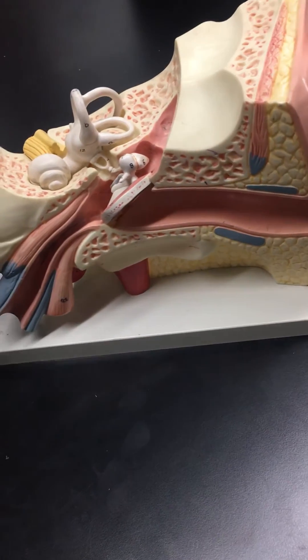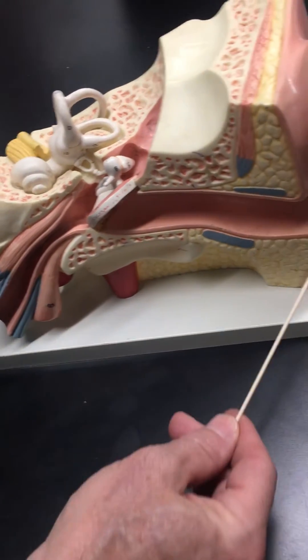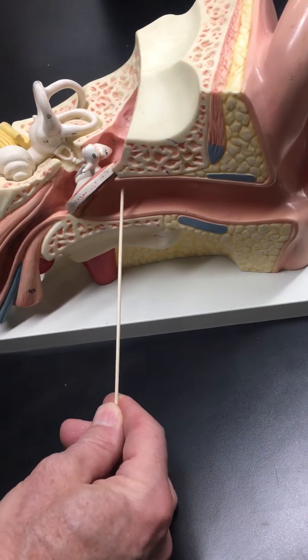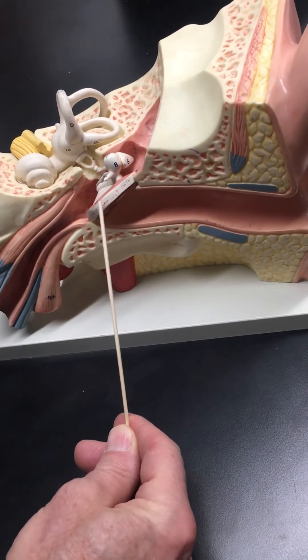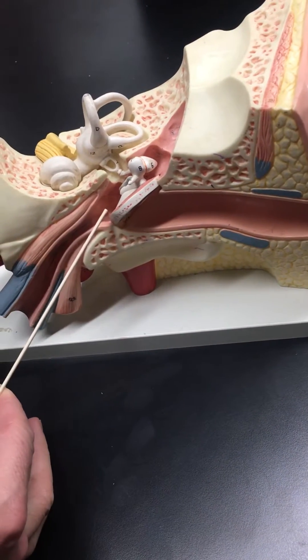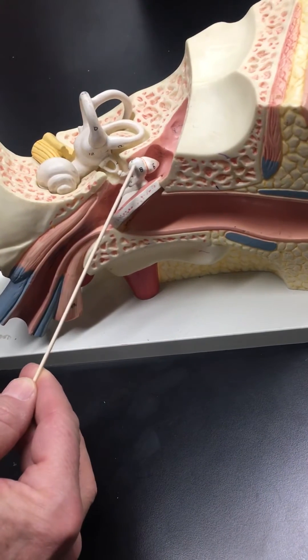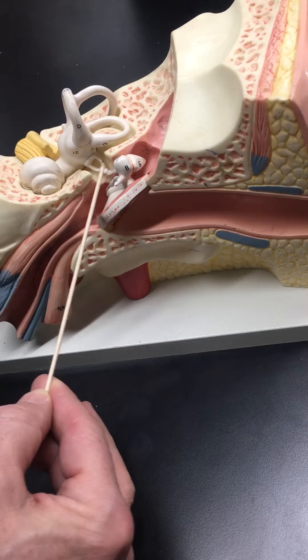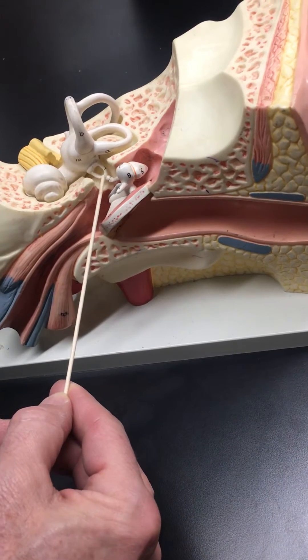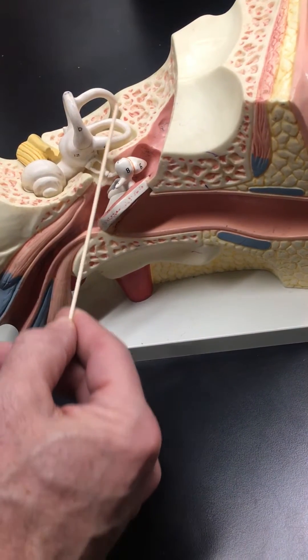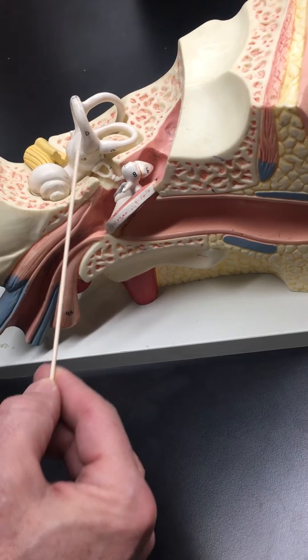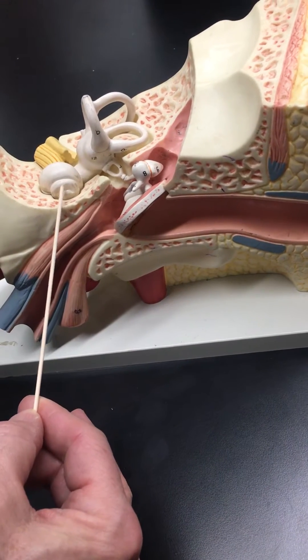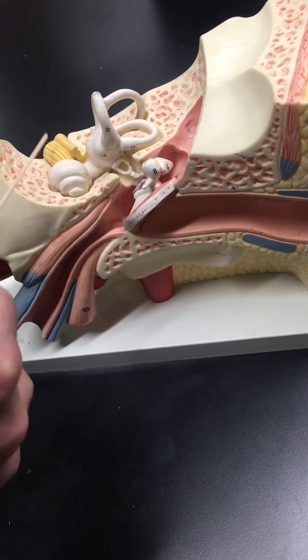Okay, close-up version of the ear. External acoustic meatus, tympanic membrane, malleus, incus, stapes, semicircular canals - three of them, cochlear, vestibulocochlear nerve.